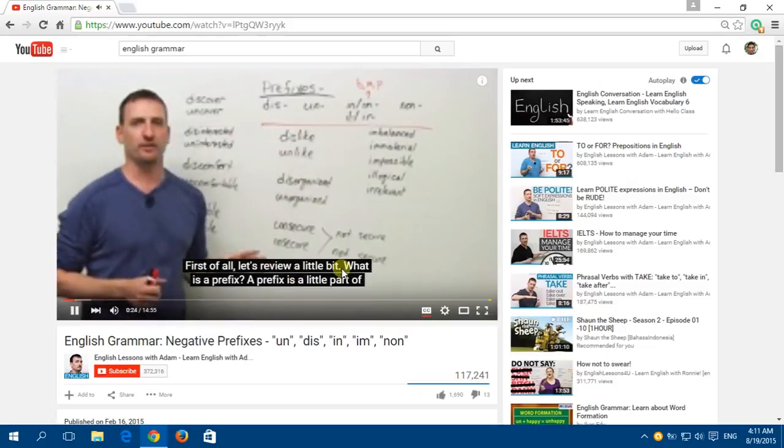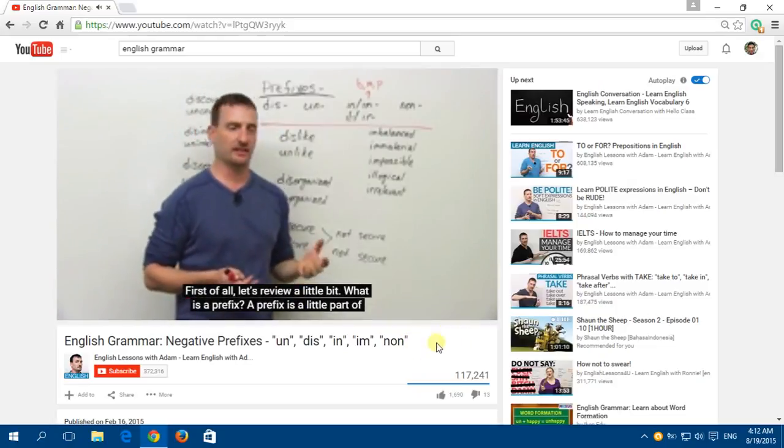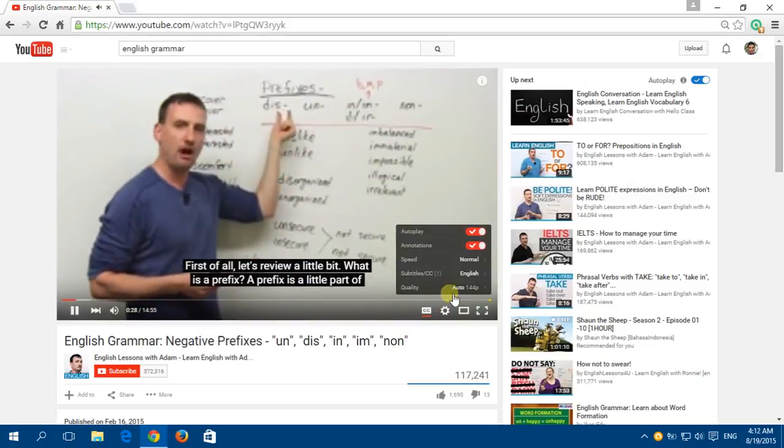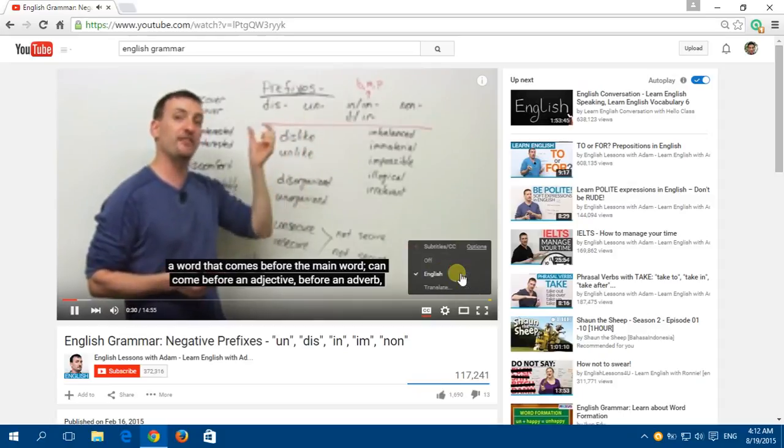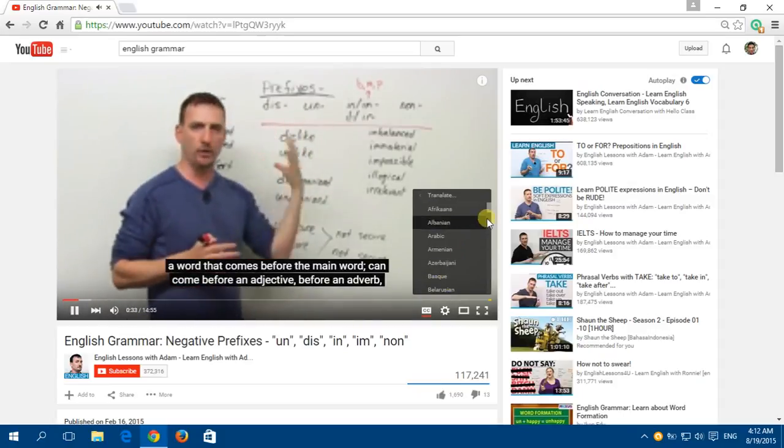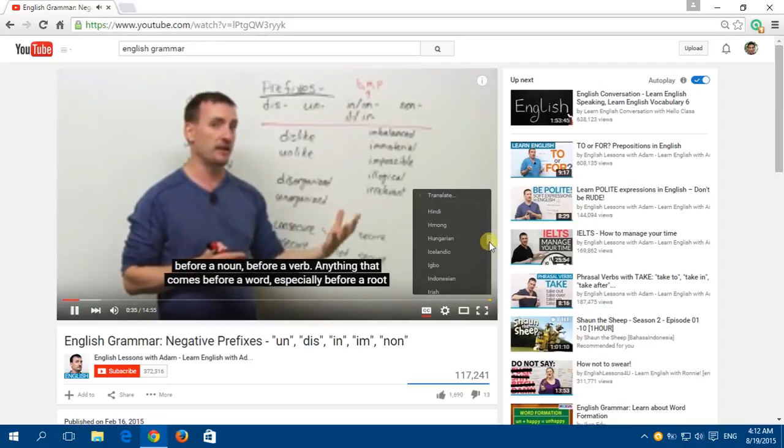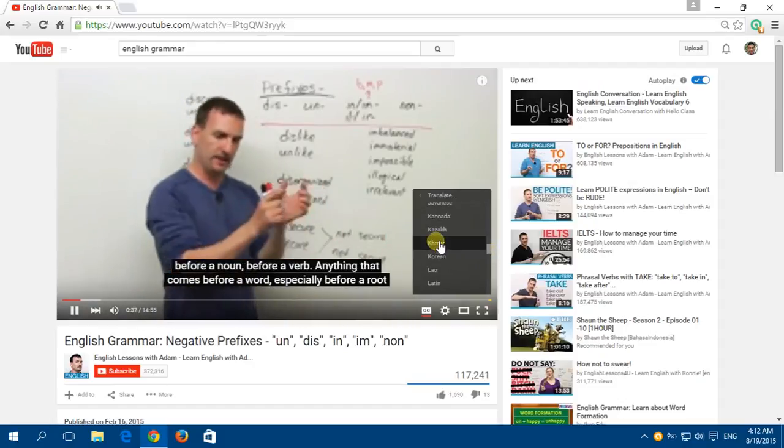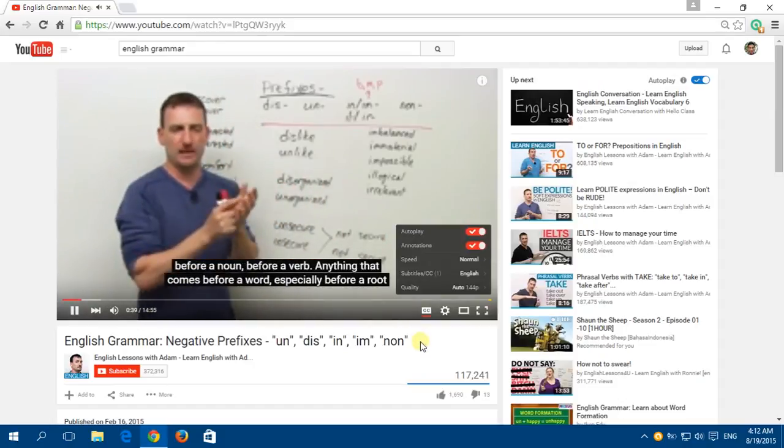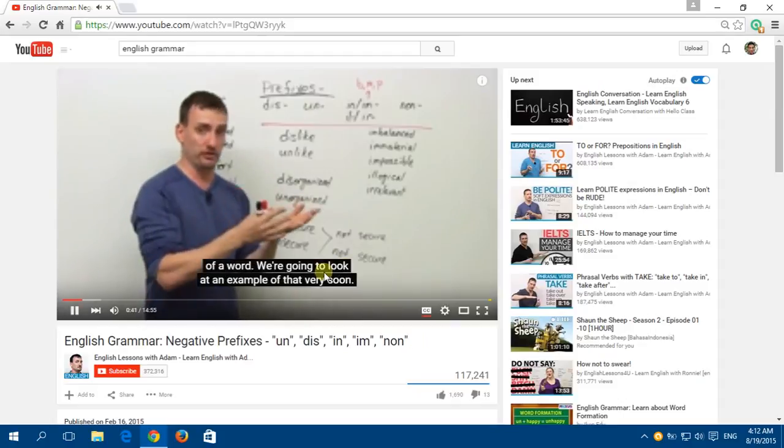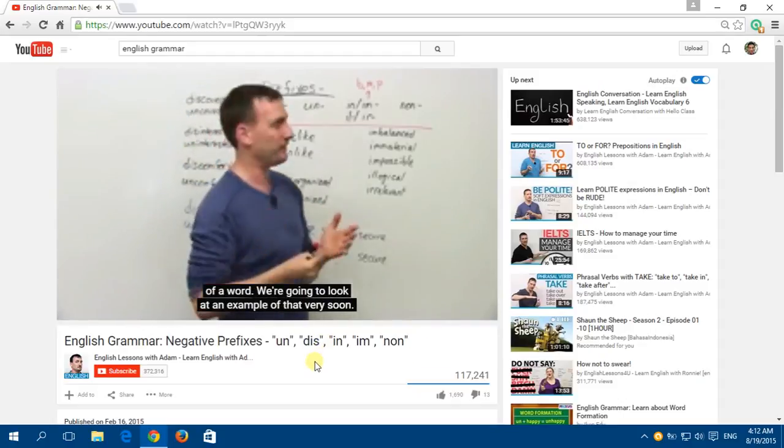First of all, let's review a little bit. What is a prefix? A prefix is a little part of a word that comes before the main word. It can come before an adjective, before an adverb, before a noun, before a verb, anything that comes before a word, and especially before a root of a word. We're going to look at an example of that very soon.